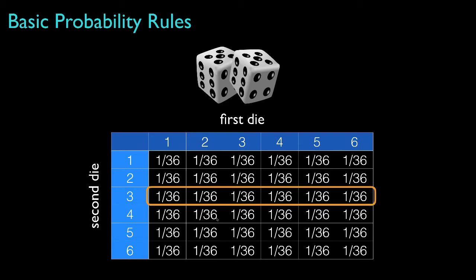One possible event is that the second die shows a three. The probability of that would be the sum of all the disjoint outcomes for which the second die shows a three — there are six of those, so we get 6/36, or 1/6. Another event might be that the first die shows a number greater than three. The probability for this event is the sum of all disjoint probabilities for those outcomes — there are 18 of those, so we get 18/36, or 1/2.